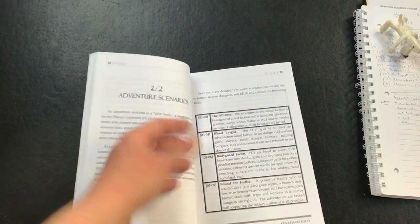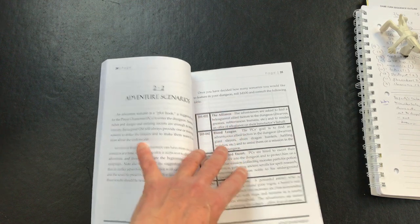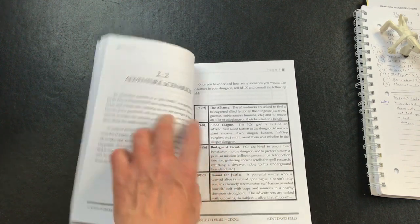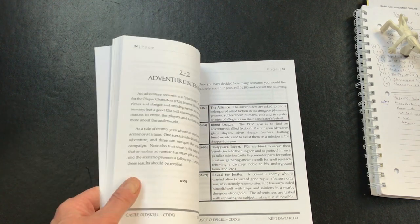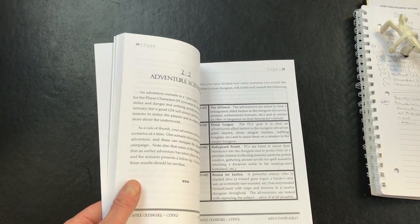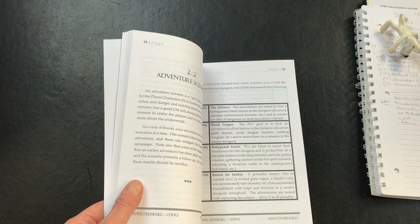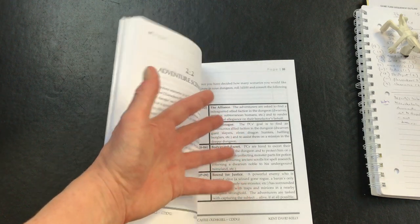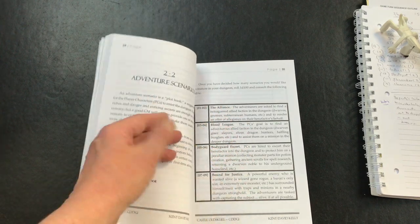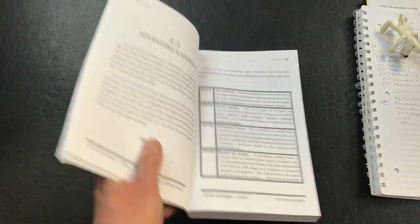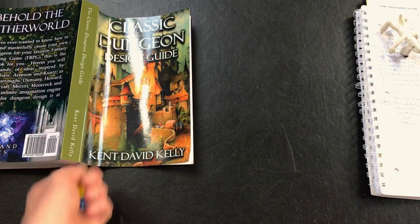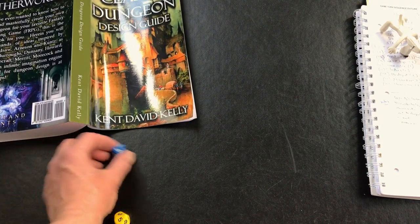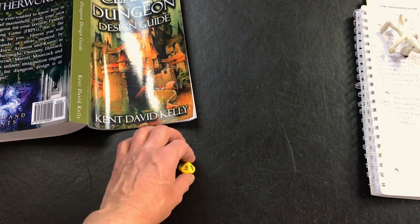The first thing I'm selecting from this book is what he calls the adventure scenarios - the plot hook. This is the reason for the story. I've already told you that I have my reason for the story so we're going to see how I can take something from here and fit it in. I'm going to roll my two d10s and see what I get. I got a 45.